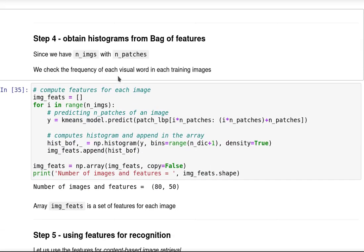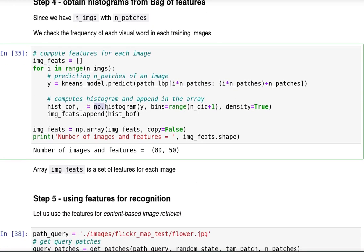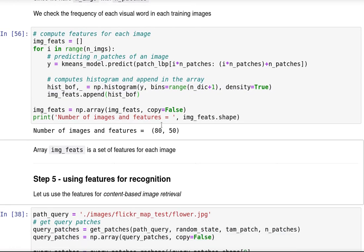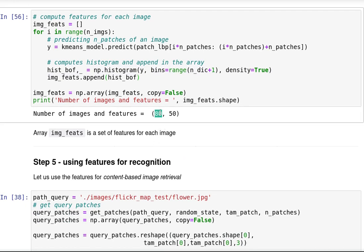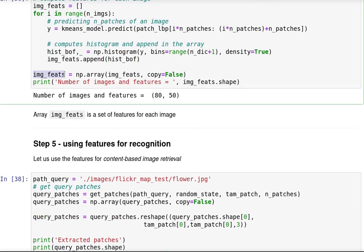Finally we can obtain histograms from the bag of features. Since we have n images with n patches, we can check the frequency of each visual word in each training image by looking into those n patches in each image and computing the histogram. Now we have 80 arrays that represent each image and 50 features. 50 is related to the size of the dictionary. I can use these as the training features for each image.